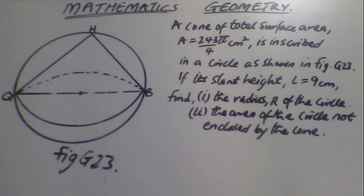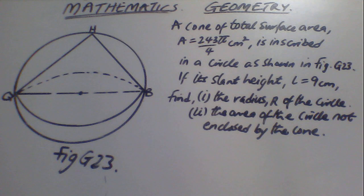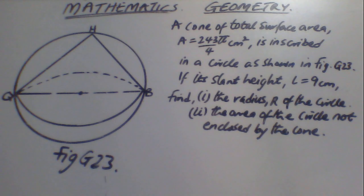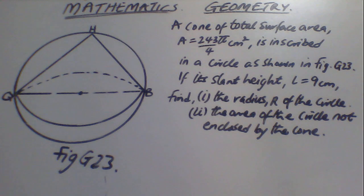Today we have a geometry problem. A coin of total surface area A equals 243π/4 cm² is inscribed in a circle as shown in figure G23. The slant height L equals 9 cm. We need to find the radius R of the circle, and secondly, the area of the circle not enclosed by the cone.